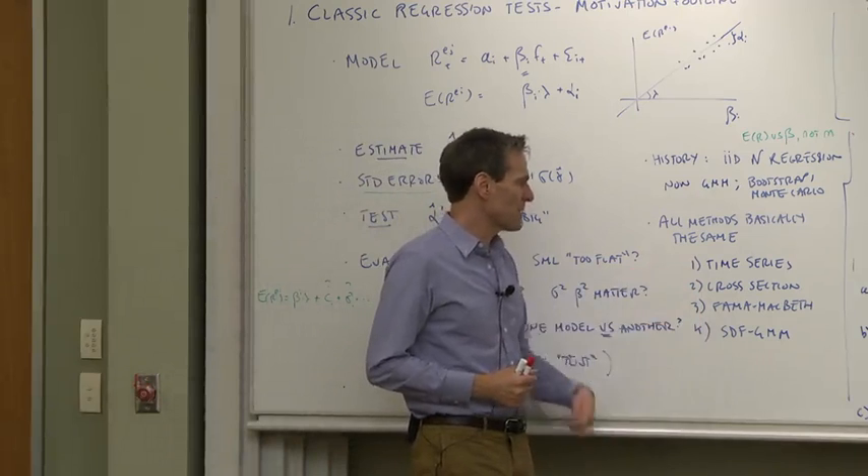The bottom line: we're going to look at a bunch of different methods - time series regression, cross-section regression, and Fama-MacBeth, and the SDF GMM approach. And what we'll find out is that all the methods are pretty much the same. However, they don't look the same. And our goal will be to understand how each of them works and then how they relate to each other and how they are basically the same thing when you're done.